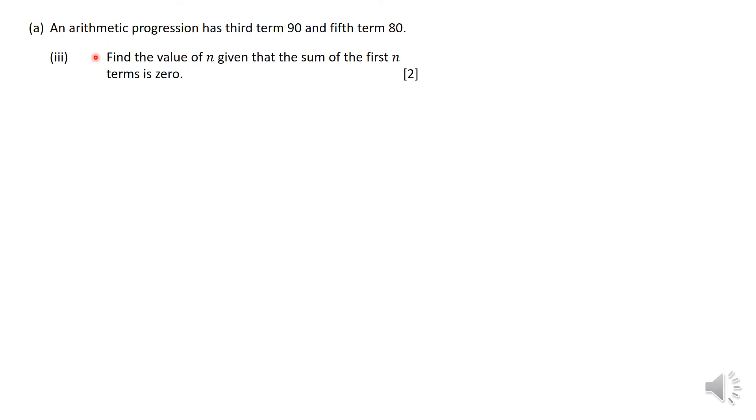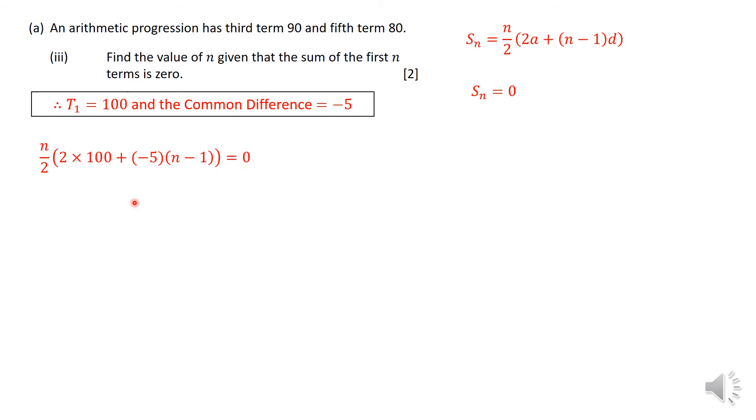The third part says an arithmetic progression has third term 90 and fifth term 80. Now we are supposed to find the value of N given that the sum of the first N terms is 0. S sub N equals 0. This formula equals 0, and you know the first term and common difference, so you substitute them in there.